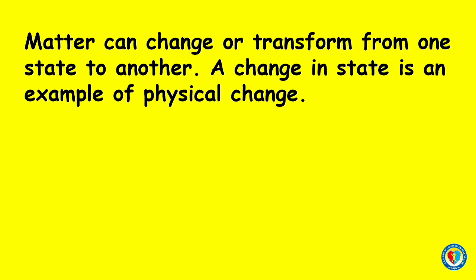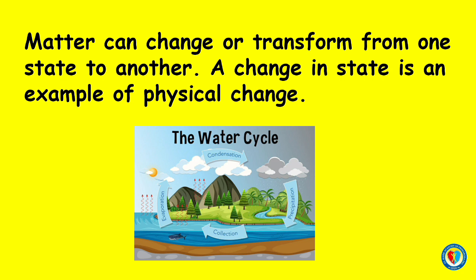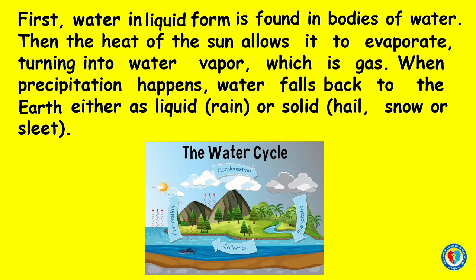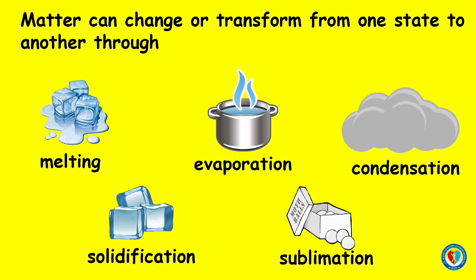Matter can change or transform from one state to another. A change in state is an example of physical change. The perfect example of change in states is the water cycle. First, water in liquid form is found in bodies of water. Then the heat of the sun allows it to evaporate, turning it into water vapor, which is gas. When precipitation happens, water falls back to the earth either as liquid rain, or solid as hail, snow, or sleet. Matter can change from one state to another through melting, evaporation, condensation, solidification, and sublimation.